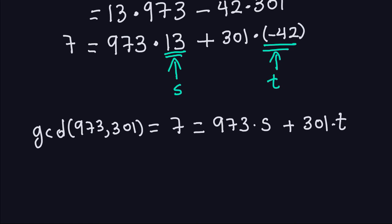Hello and welcome again. In the previous video we saw an example where we had to compute the greatest common divisor between two numbers. The numbers were 973 and 301, and we saw that the GCD between these two numbers is 7. We also saw that 7 can be expressed as a multiple of 973 plus another multiple of 301, and we found those numbers S and T: S is 13 and T is negative 42. That's what the theorem says — the GCD can always be expressed in this way.